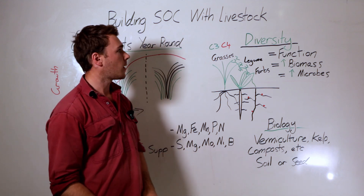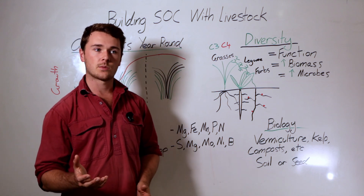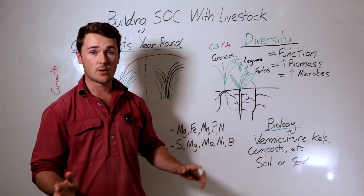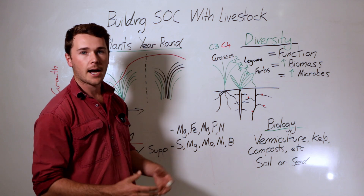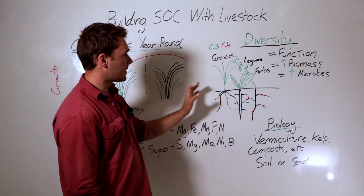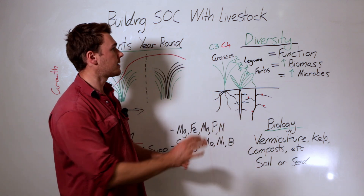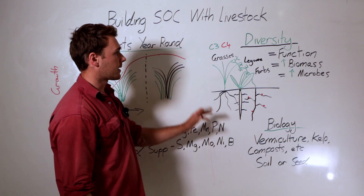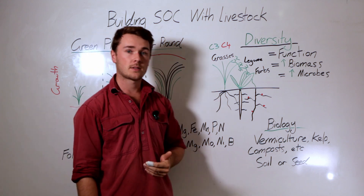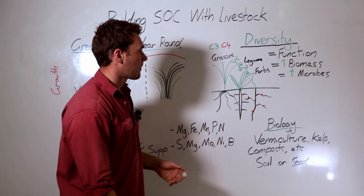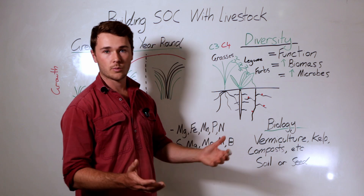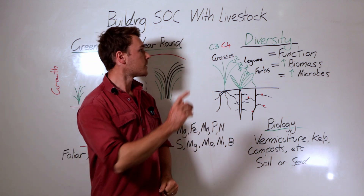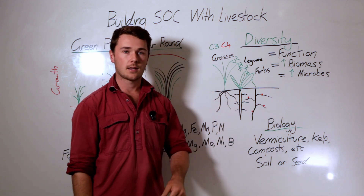Depending on your context as a livestock producer, you might have rangeland settings — 250,000 hectares in Queensland or Western Australia — where you don't have a large budget per hectare to seed diverse pastures. In that system, your diversity will come more from your grazing management — making sure you're not overgrazing and giving everything enough time to recover to bring back diversity. If you're planting each year for forage, it's easily done by changing the seeds in your pasture mix.